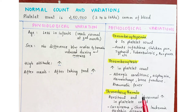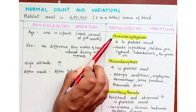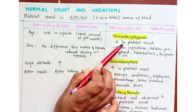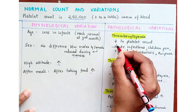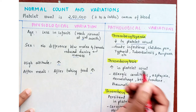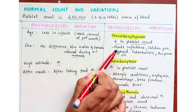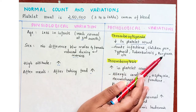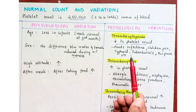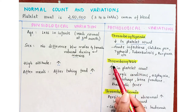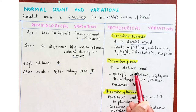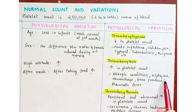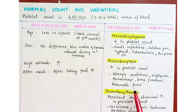Pathological variations are very important. Thrombocytopenia means decrease in platelet count and is seen in acute infections, chicken pox, typhoid, tuberculosis, purpura and similar diseases. Thrombocytosis means increase in platelet count and is mainly seen in allergic conditions, asphyxia, hemorrhage, bone fracture, rheumatic fever and such diseases.